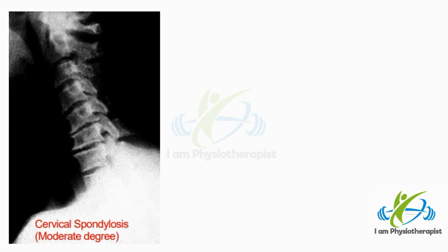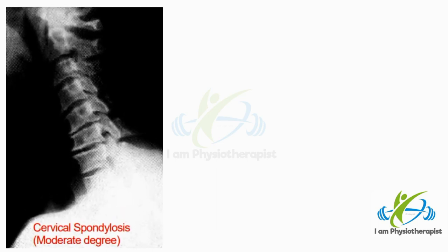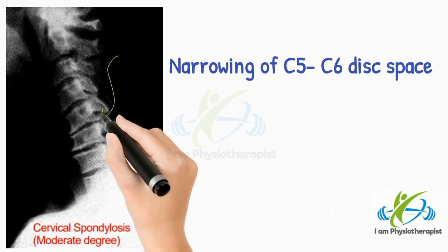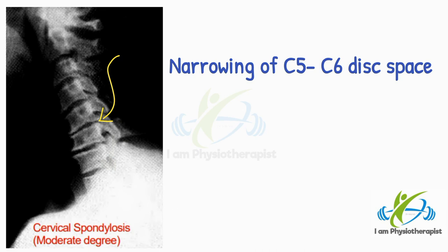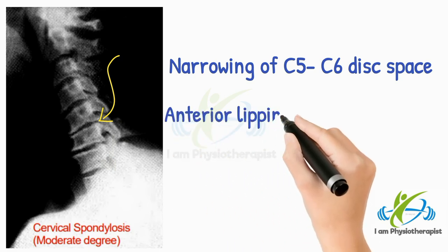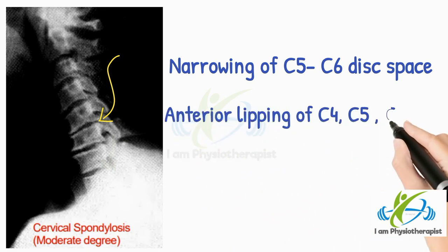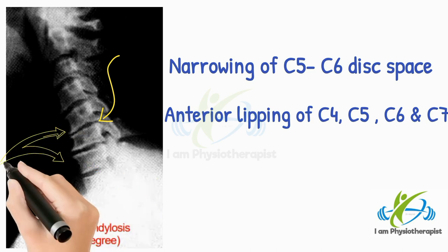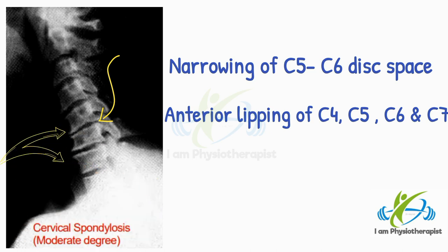In this X-ray, there is narrowing of the C5–C6 disc space and to a lesser extent C6–C7. There is anterior lipping of C4, C5, C6, and C7. Diagnosis is cervical spondylosis.